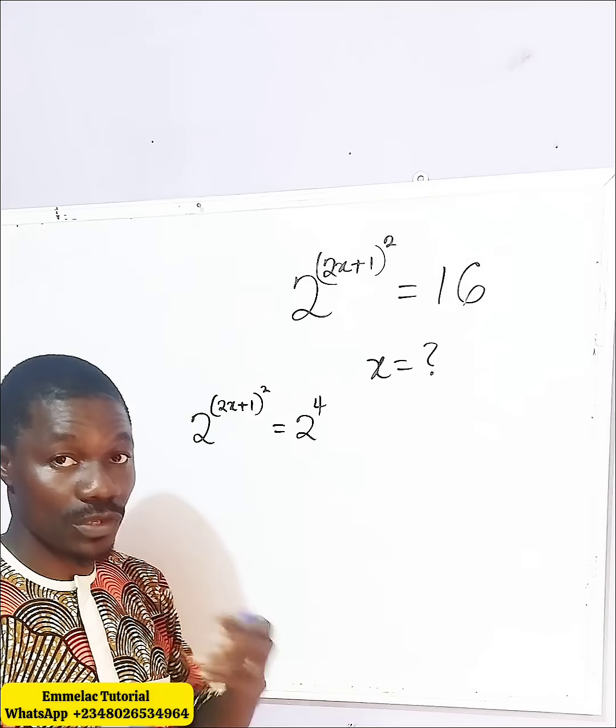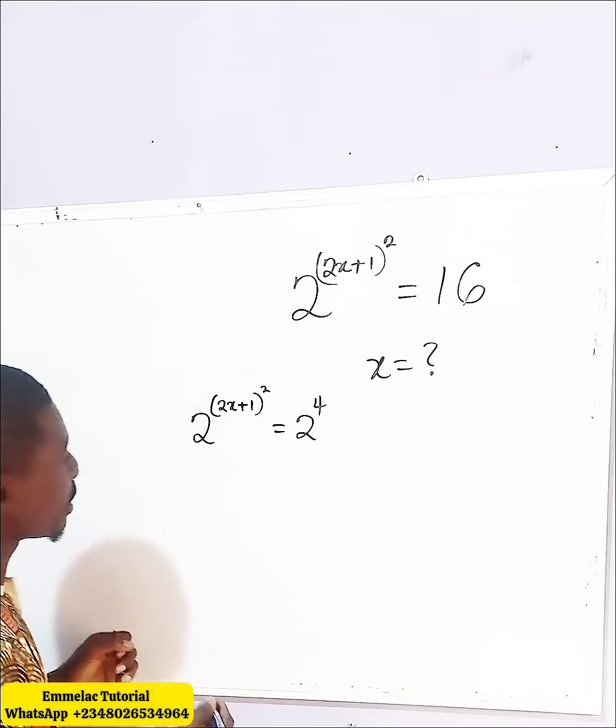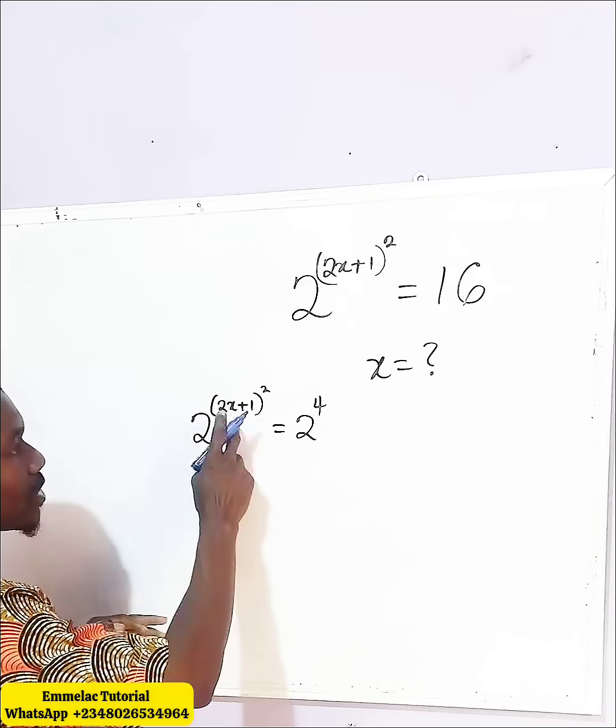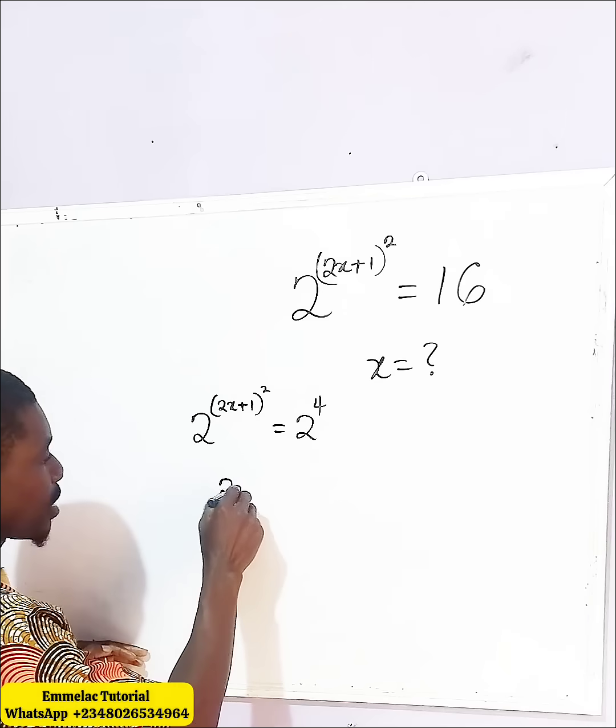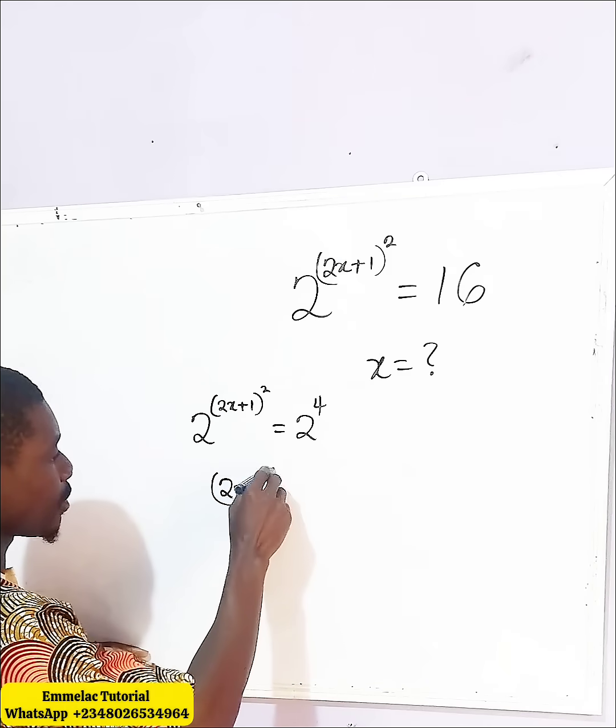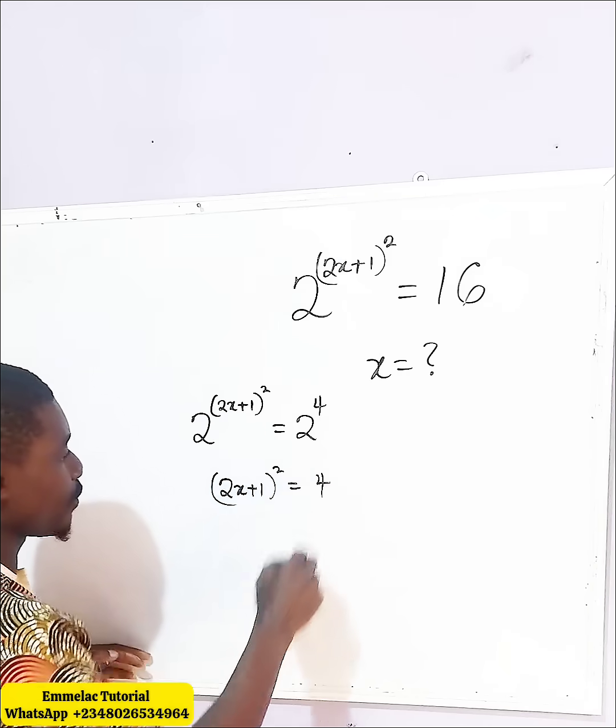Because 2 raised to the power of 4 is 16. So at this point now, since we have the same base, let us equate the exponent. So here we have (2x plus 1) to the power of 2, then it equals 4.